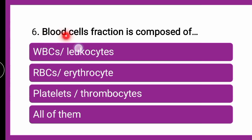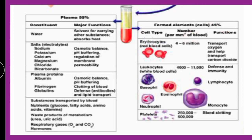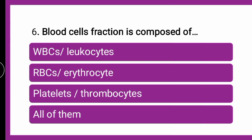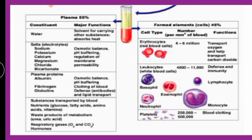Next question: blood cell fraction is composed of — WBCs (leukocytes), RBCs (erythrocytes), platelets (thrombocytes), or all of them? The blood cells include erythrocytes (RBCs), leukocytes (WBCs), and thrombocytes (platelets). The correct answer is all of them.